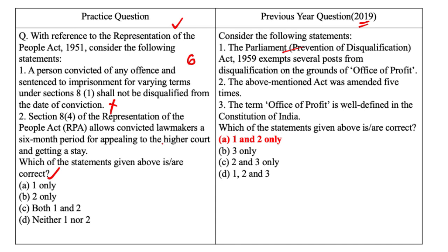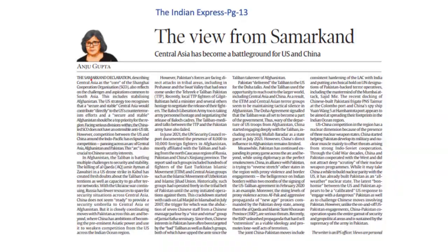Statement two: Section 8.4 of the RPA Act allows convicted lawmakers a 6-month period for appealing to a higher court and getting a stay. This statement is also incorrect. In Lily Thomas v. Union of India 2013, the Supreme Court ruled that any MP, MLA, or MLC convicted of a crime and given a minimum of 2 years imprisonment would lose membership of the house with immediate effect, without being given 3 months time for appeal, as was the case before. The court also struck down Section 8.4 of the RPA Act as unconstitutional — Section 8.4 had allowed convicted lawmakers a 3-month period for appealing. Both statements are incorrect, so the correct answer is D, neither one nor two.